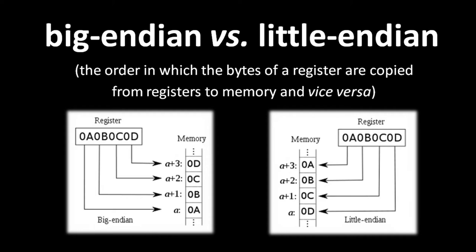As a binary number, 0A is the most significant byte. The question is: when we copy the register contents to some address n in memory, do we copy the most significant byte 0A to n, 0B to n+1, 0C to n+2, and 0D to n+3 — or do we copy in the opposite order, copying the least significant byte 0D to n, 0C to n+1, 0B to n+2, 0A to n+3? A CPU that starts with the most significant byte uses the big Endian scheme, and a CPU that starts with the least significant byte uses the little Endian scheme. In both cases, the order is maintained when copying from memory to a register, so the register contents remain unchanged after a round-trip.